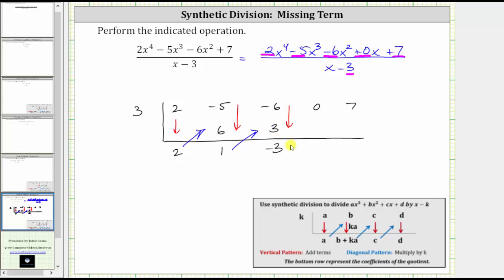And now we multiply by k or multiply by three. Negative three times three is negative nine. Add vertically. Zero plus negative nine is negative nine. Multiply by k, which again is three. Negative nine times three is negative twenty-seven.